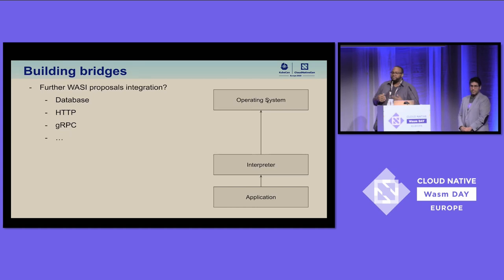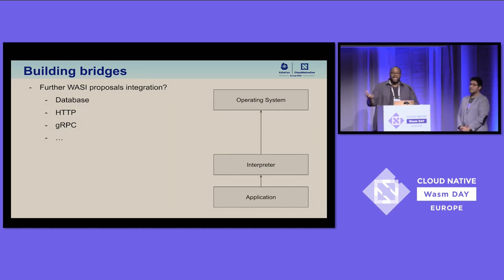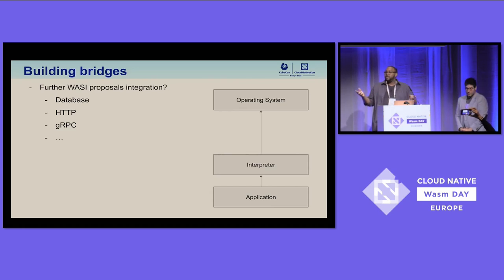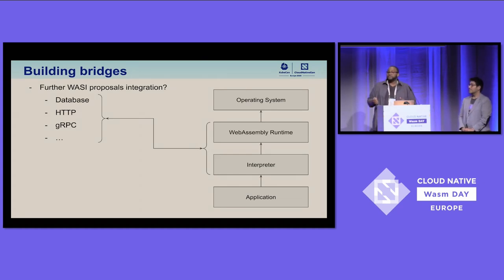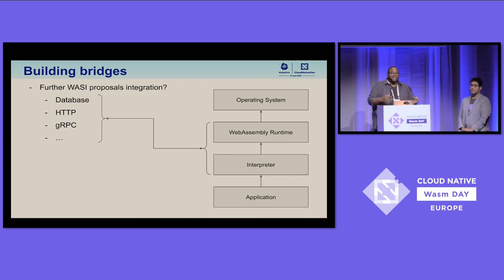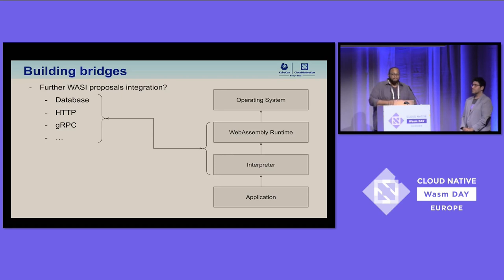How can we make the experience with interpreters even better? With WASI proposals coming up for databases, HTTP, and more, we can start replacing a lot of functionality in our interpreters with native WASI support. A full HTTP client in the Python standard library might take one to three megabytes — but via the component model and WASI, we can remove so much handwritten functionality from our interpreters, getting binary sizes way, way down.